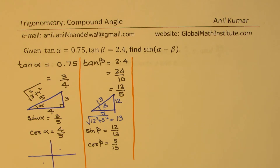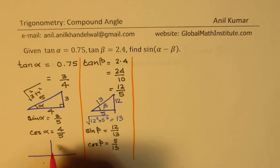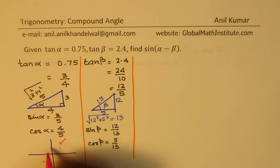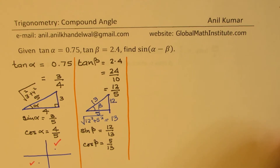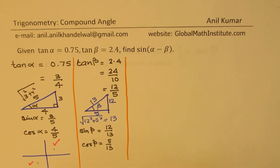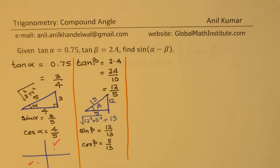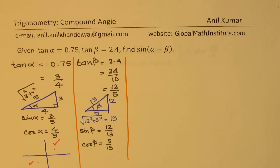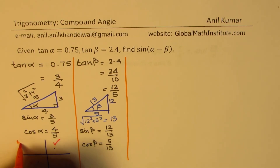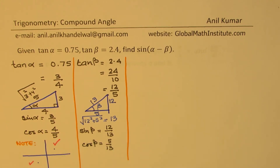Since tan is positive in both quadrants 1 and 3, we do have two scenarios. tan α and β could both be in quadrant 1, where both are positive, or they could both be in quadrant 3. If they are in quadrant 1, both values are positive; but if they are in quadrant 3, both sine and cosine values will be negative. Remember that part. Let's move on with that note.